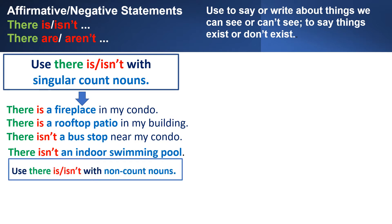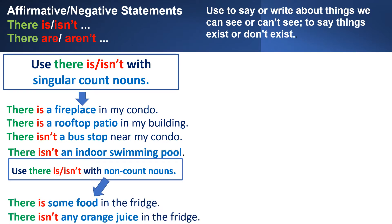With non-count nouns, we also use there is and there isn't, because all non-count nouns are singular. So we say: there is some food in the fridge. There isn't any orange juice in the fridge.